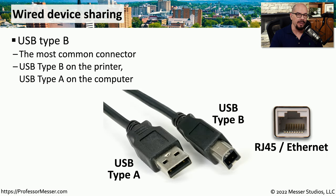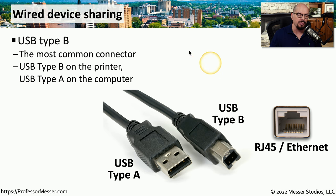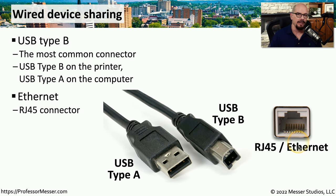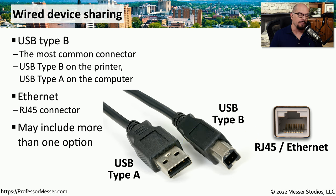For others to be able to print to this multifunction device, they need to be able to physically communicate with it. One common way to connect to a printer is using USB, or the Universal Serial Bus. A common connector on a printer might be the USB Type B connector — you use Type A on your computer, connecting to the printer with a Type B interface. The other option might be an RJ45, which connects to an ethernet network, allowing you to print across the network without any USB connectivity.